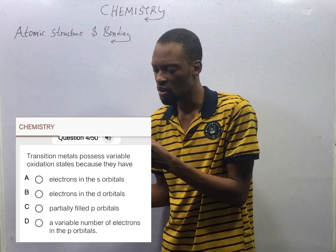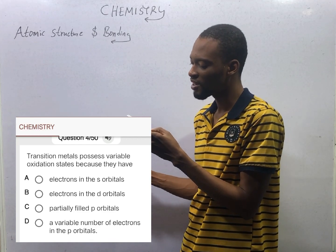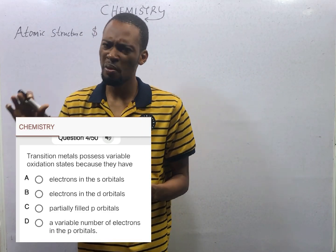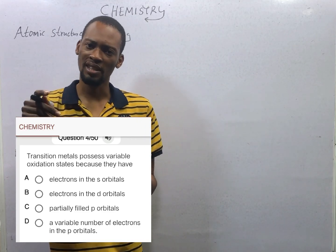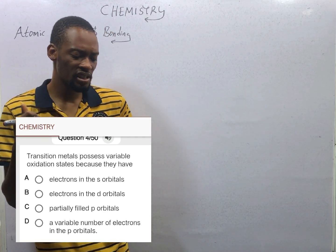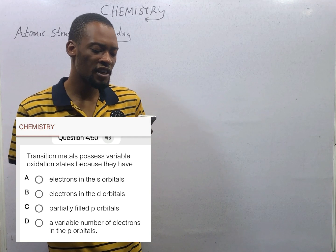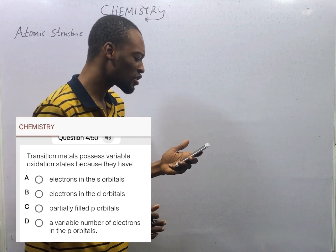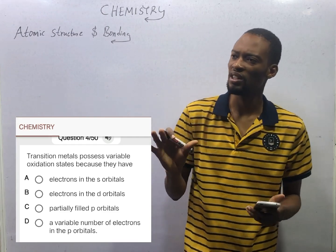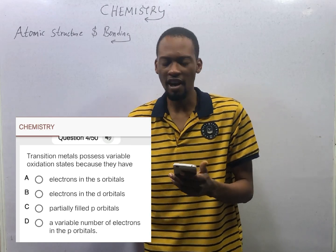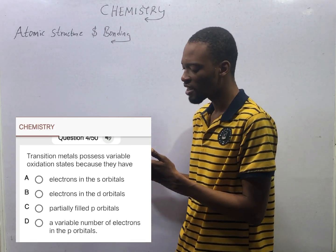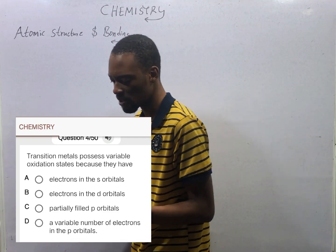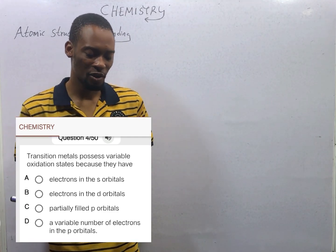It is not because of electrons in s-orbitals or partially filled p-orbitals. No — they have partially filled d-orbitals. Don't let option C confuse you. Transition metals have filled p-orbitals; it is the d-orbitals that are partially filled. Option D says a variable number of electrons in the p-orbitals — no. When dealing with transition metals, s-orbitals and p-orbitals should not even come into play. You mention the d-orbitals: they have partially filled d-orbitals, which means they have electrons in the d-orbitals and also unfilled electrons in the d-orbitals. Option B is the correct option.